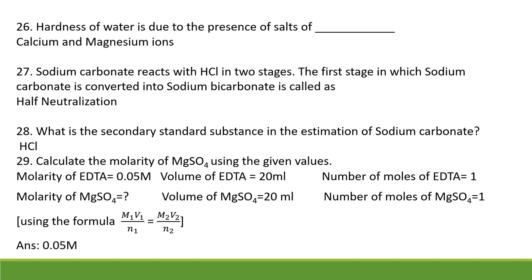Hardness of water is generally due to the presence of calcium and magnesium ions. Sodium carbonate reacts with HCl in two stages. The first stage, where sodium carbonate is converted into sodium bicarbonate, is called semi-neutralization or half-neutralization. What is the secondary standard substance used in the estimation of sodium carbonate? That is HCl, which is the second step in the procedure — standardization of HCl, which has unknown concentration, for which we use standard Na2CO3.